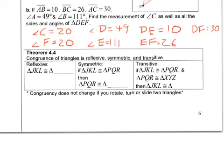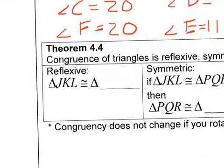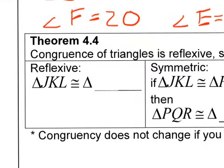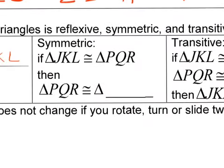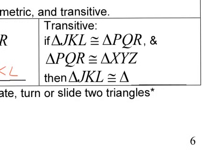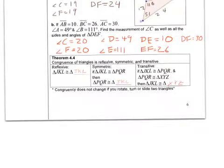Just a little review of some properties. The reflexive, symmetric, and transitive properties that we learned about congruence apply to triangles as well. Reflexive: triangle JKL is congruent to triangle JKL. Symmetric: if JKL is congruent to PQR, then PQR is congruent to JKL. Transitive: if JKL is congruent to PQR, and PQR is congruent to XYZ, then JKL is congruent to triangle XYZ.